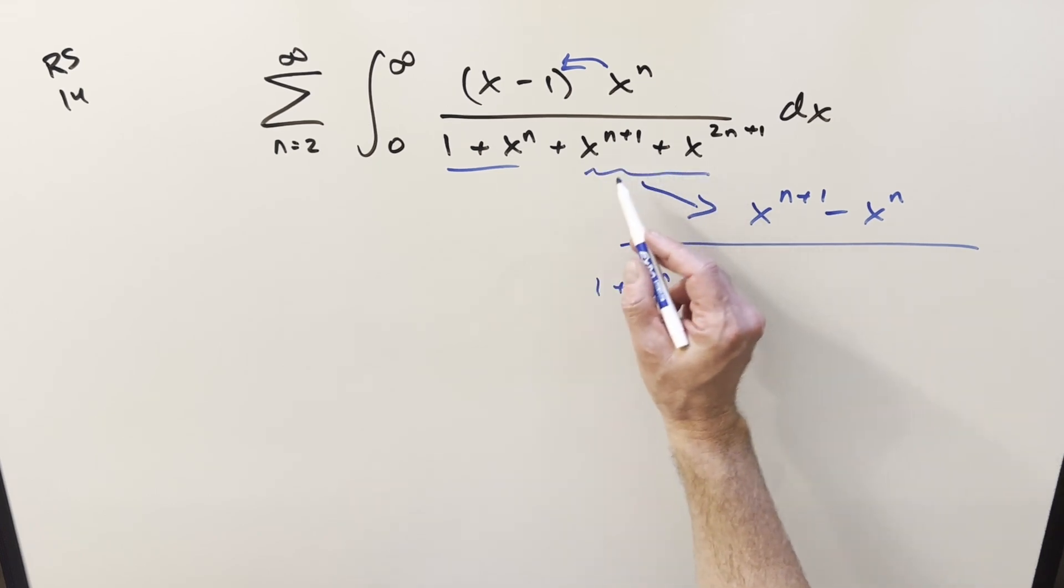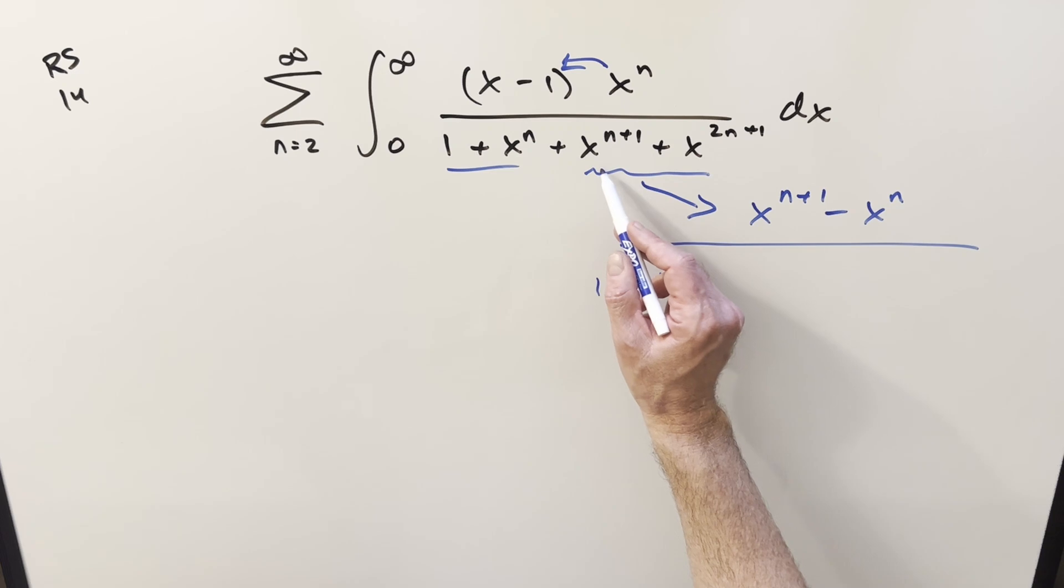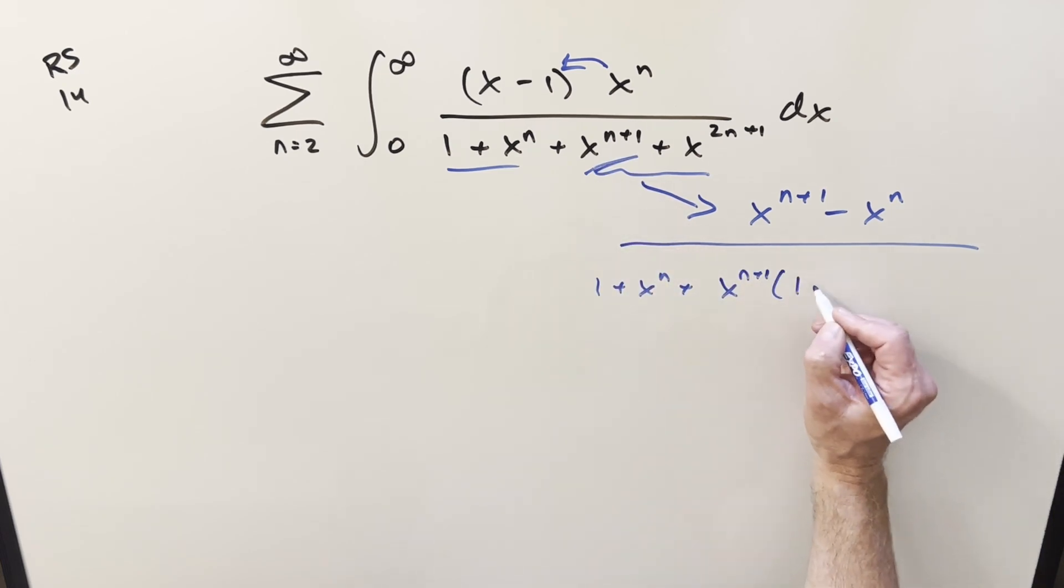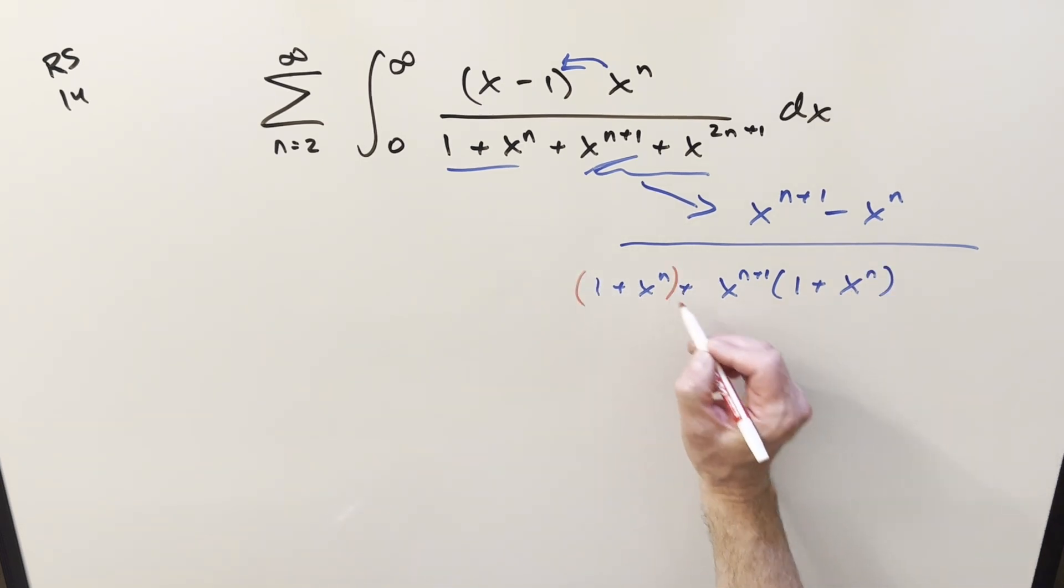In here, we can actually factor out. Let's factor out this. So if I factor out x to the n plus 1 on this, we get 1 plus, this other term is just going to become an x to the n. But now notice we've got this 1 plus x to the n in common. So what we can do is rewrite this denominator and factor that out. So this is going to become 1 plus x to the n times this becomes 1 plus x to the n plus 1 all over this stuff here.